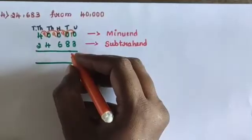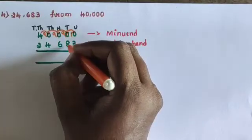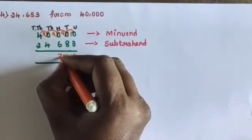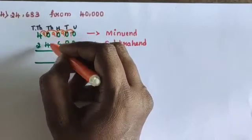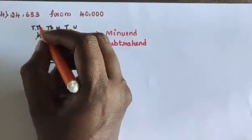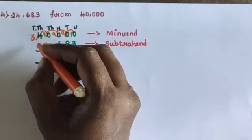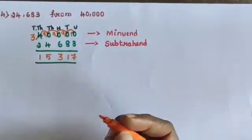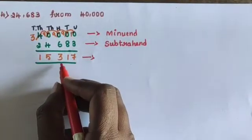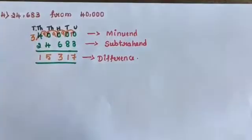10 minus 3 equals 7. 9 minus 8 equals 1. Subtract in hundreds place: 9 minus 6 equals 3. Subtract in thousands place: 9 minus 4 equals 5. Remaining in ten-thousands place: 3 minus 2 equals 1. The difference of these two numbers is 15,317.